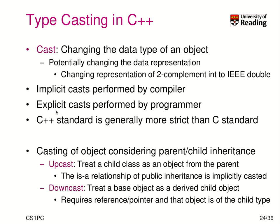What is new in C++ is that we have to think about casting objects that have a parent-child inheritance relationship. In terms of objects, we could talk about an upcast, which means we try to treat a child class as an object from the parent. For example, if a student is a person, then wherever you can use a person object, you can use a student as well. In the hierarchy the student is lower than the person — that's why it's called an upcast, because we cast it up in the hierarchy.